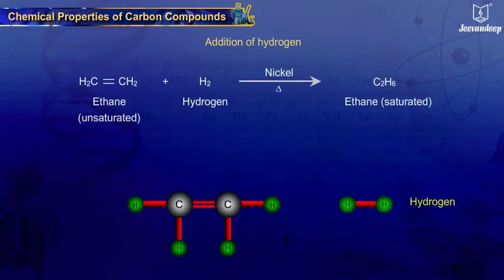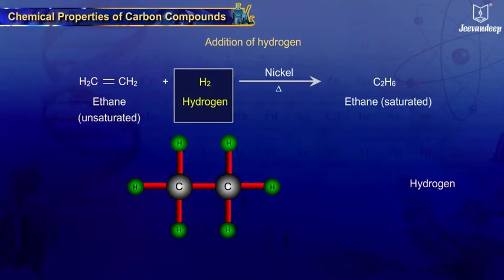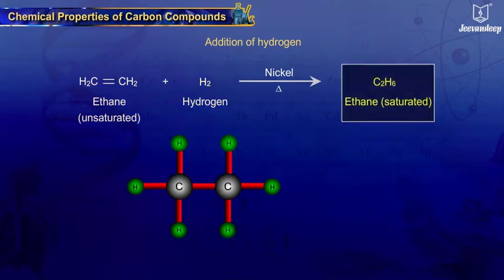Addition of Hydrogen. One molecule of ethene, which is an unsaturated hydrocarbon, adds a molecule of hydrogen, forming ethane, which is a saturated hydrocarbon, as the product.